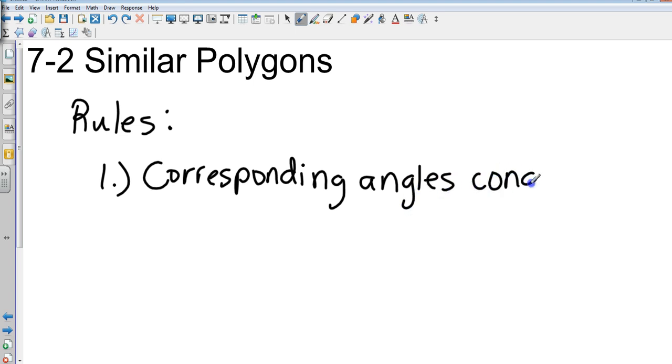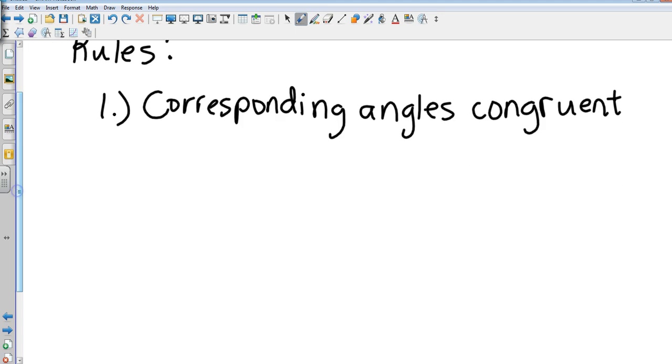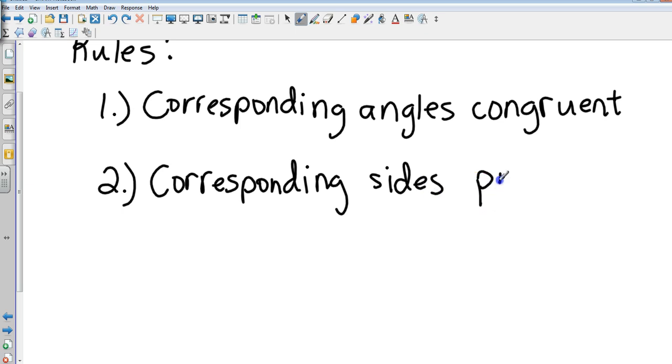Okay, so the very first test, the corresponding angles of whatever shapes we're going to look at have to be congruent. The second test has to do with the sides, and that is the corresponding sides are proportional.